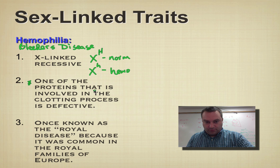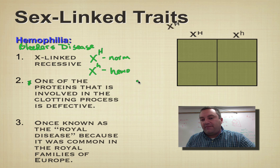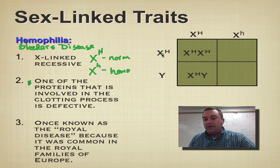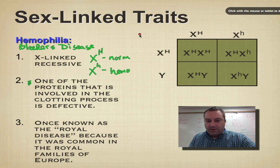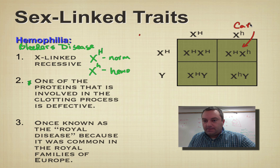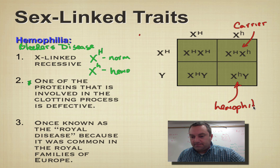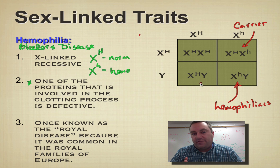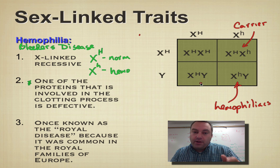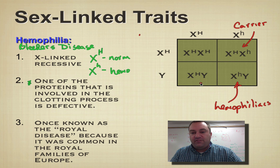Here's a Punnett square for hemophilia. You have a mother who's a carrier and a husband who is normal. Filling in the square, you'll notice that half of the female offspring are carriers, and half of the males are going to be hemophiliacs. The other son is going to be normal. All of these sex-linked traits are going to have the same inheritance pattern — they show up in males more often, and males inherit it from their mother because their mother was probably a carrier. Just like with colorblindness, it's very rare for a female to be a hemophiliac.